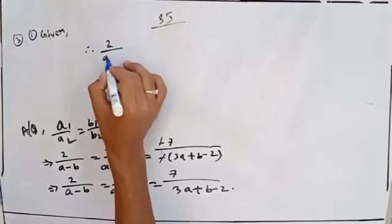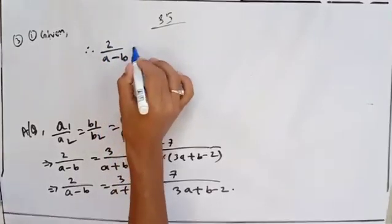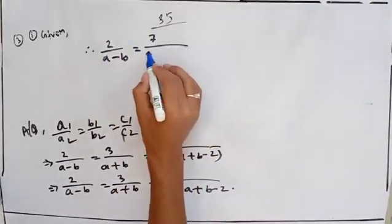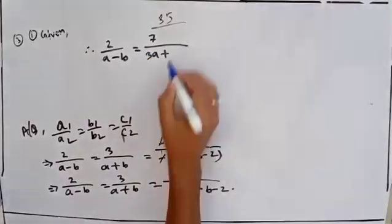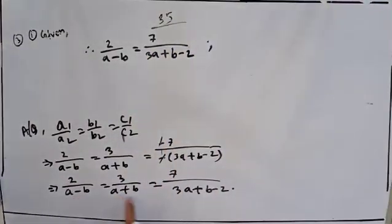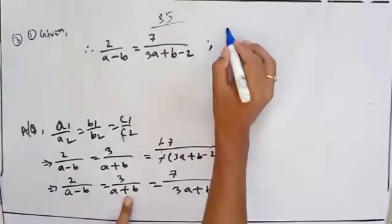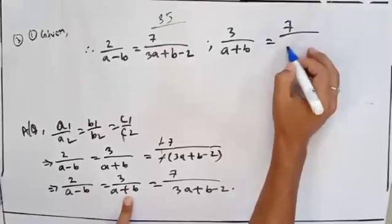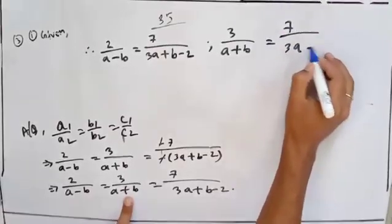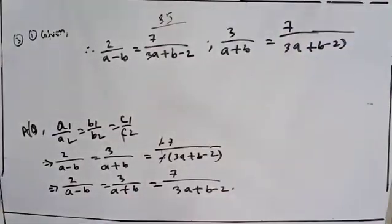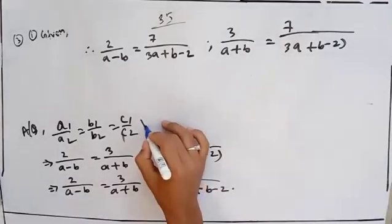So the equation is: 2 by (a minus b) equal to 3 by (a plus b) equal to 7 by (3a plus b minus 2).